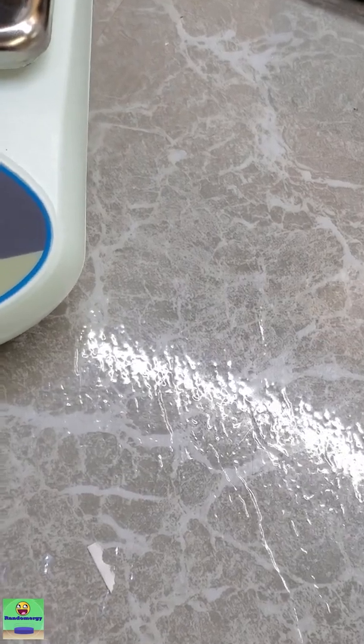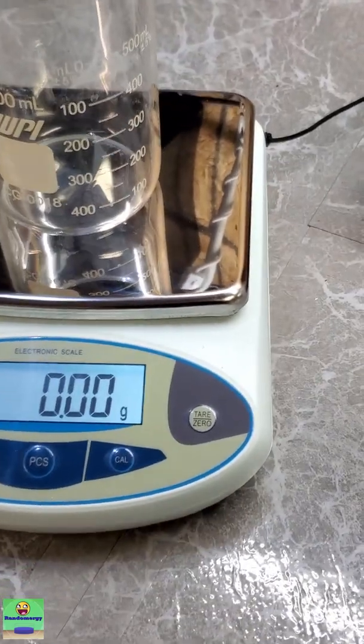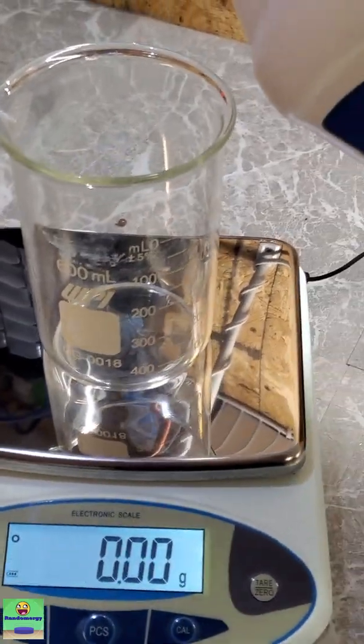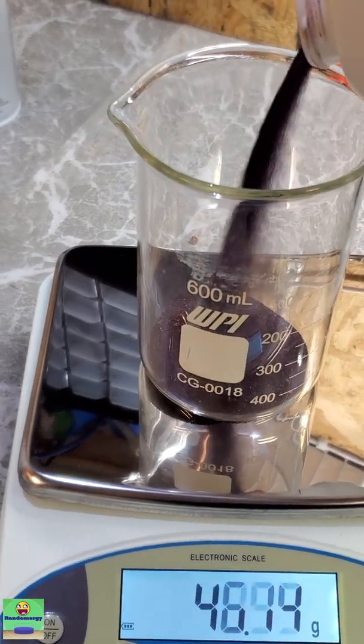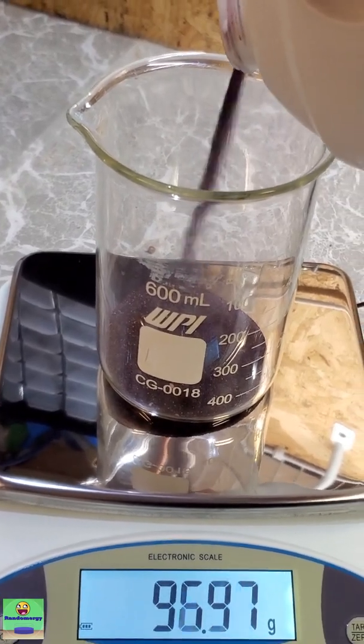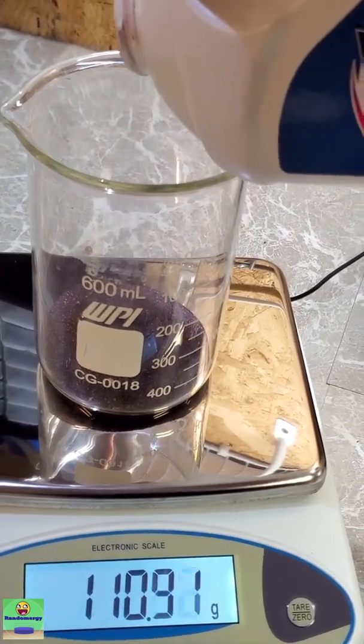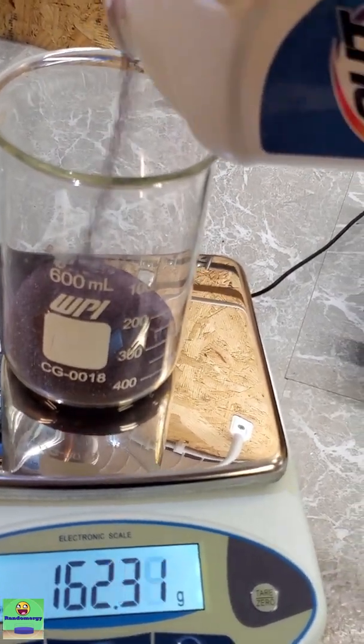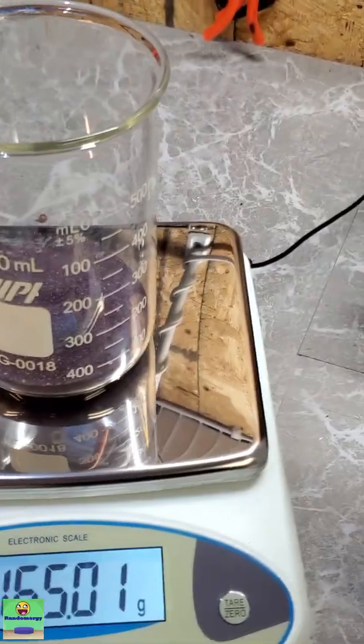First thing we got to do is tare out this scale with this beaker on it. Good. Okay. Now I'm going to measure out the 161.75 grams. So I'll just pour this in potassium permanganate. It's actually a pretty dense powder. So it doesn't take as much as you'd think. At least I don't think so.